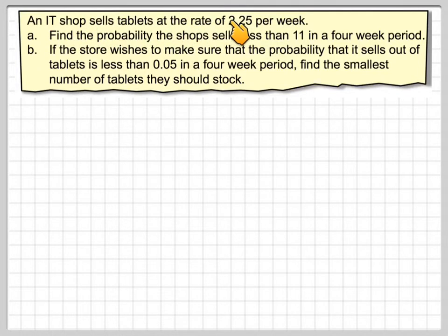An IT shop sells tablets at the rate of 2.25 per week. Find the probability that the shop sells less than 11 in a four-week period. If the shop wishes to make sure that the probability that it sells out of tablets is less than 0.05 in a four-week period, find the smallest number of tablets they should stock.